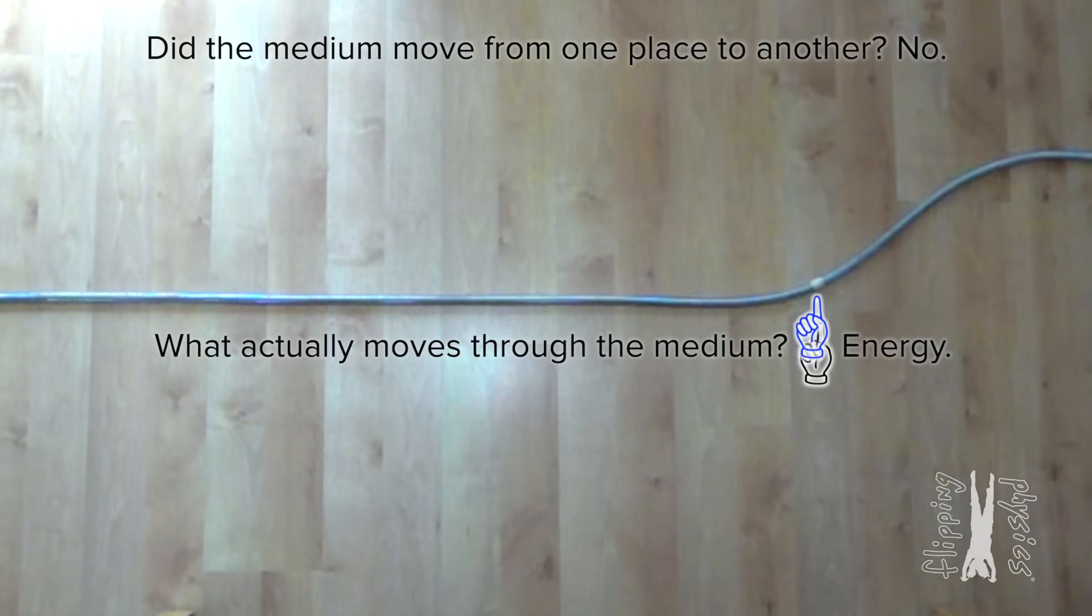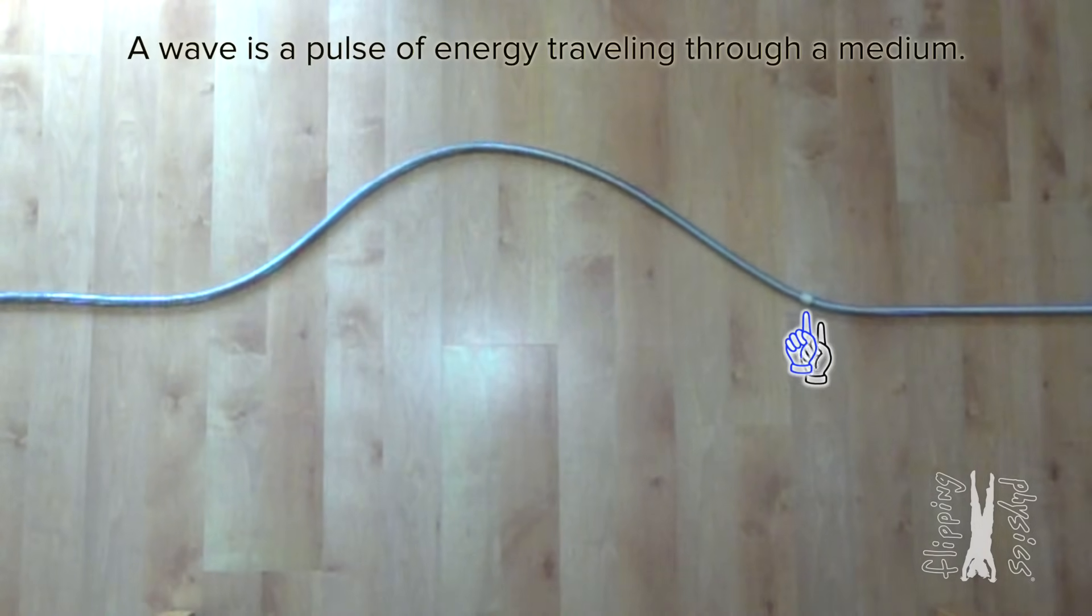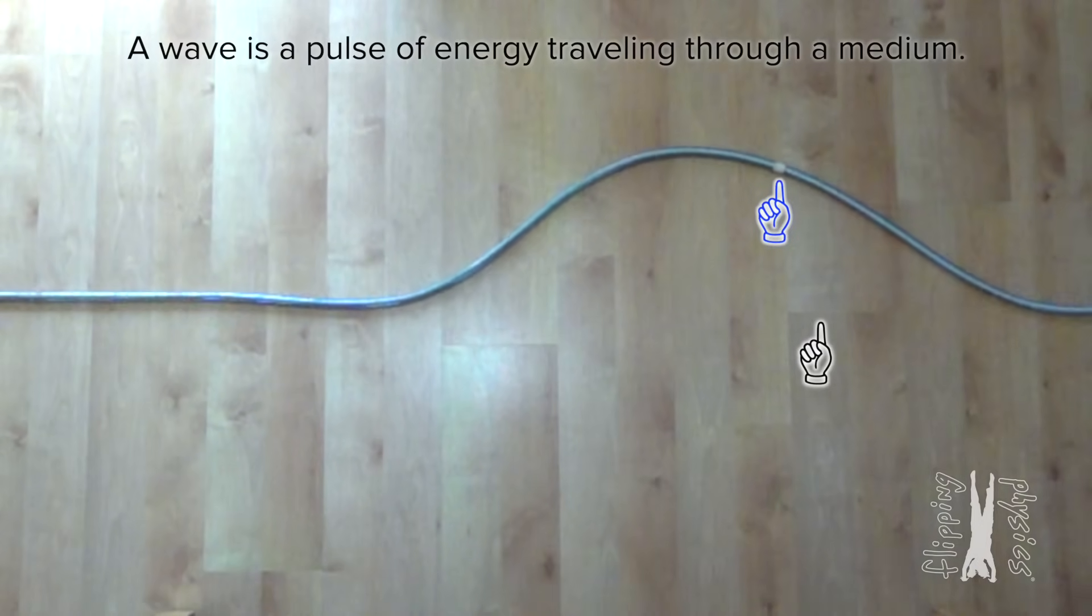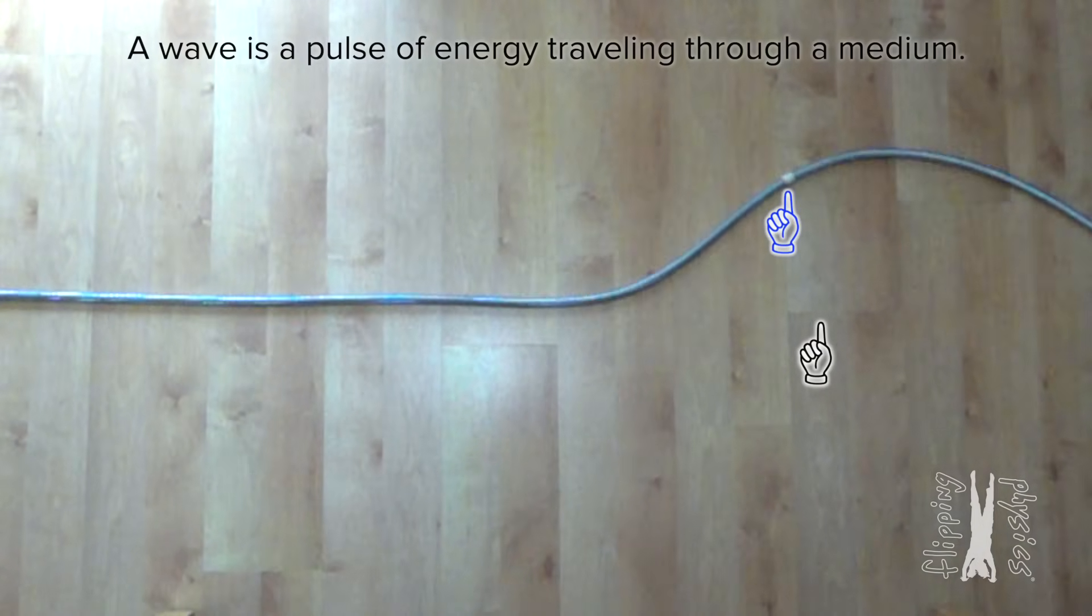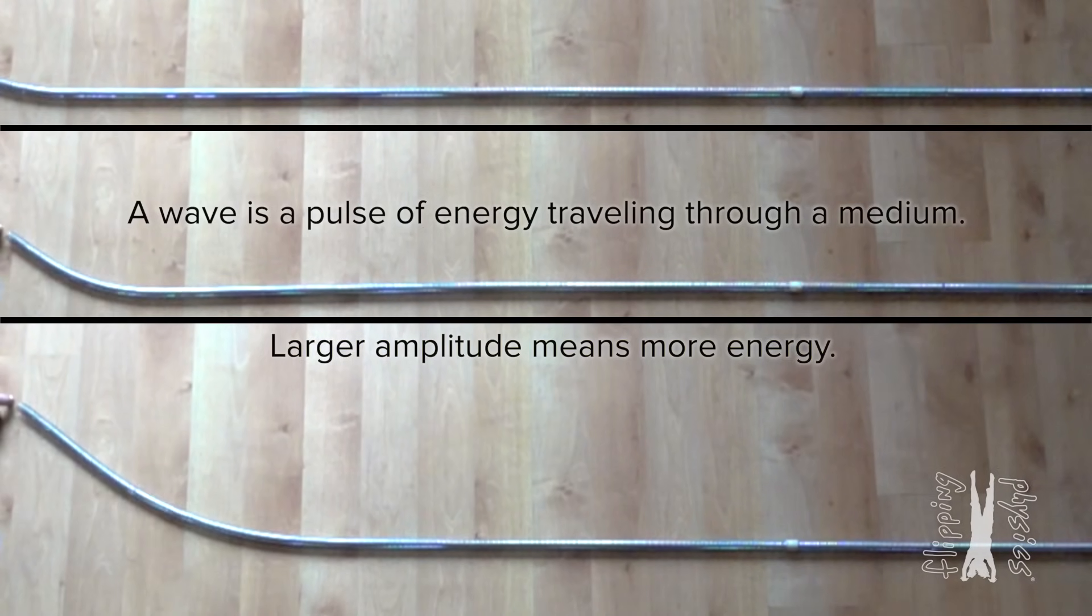Right. The energy contained in the disturbance of the medium travels along the spring. In other words, the wave is a pulse of energy traveling through the medium. That makes sense. And I bet the larger the amplitude of the wave, the more energy contained in the wave.